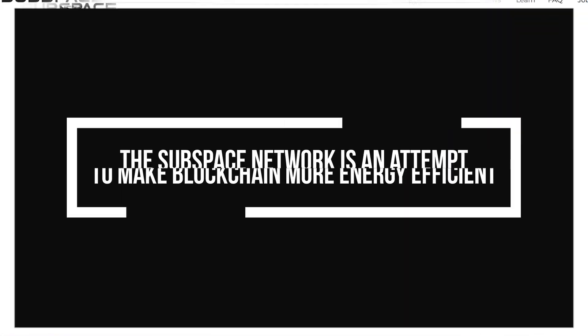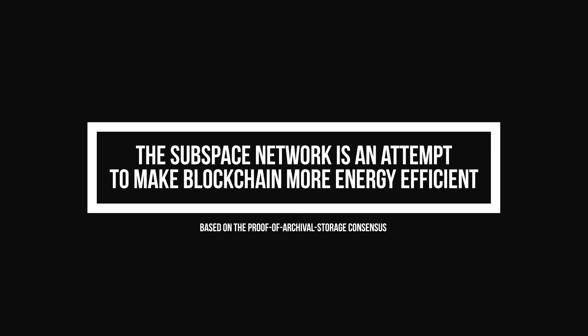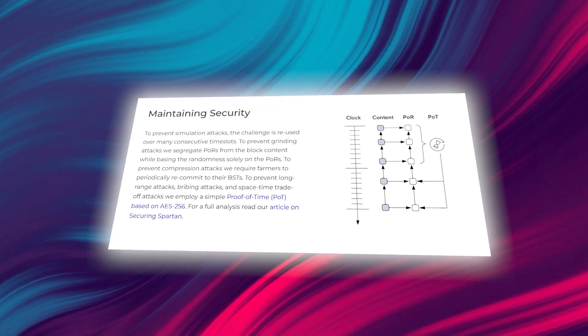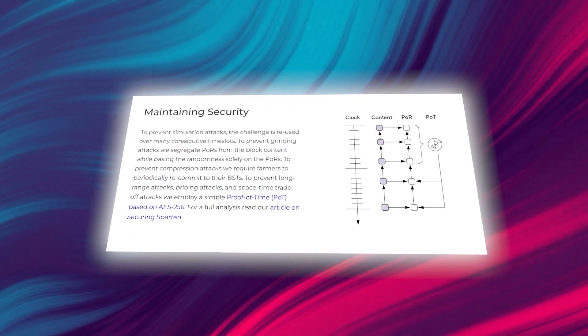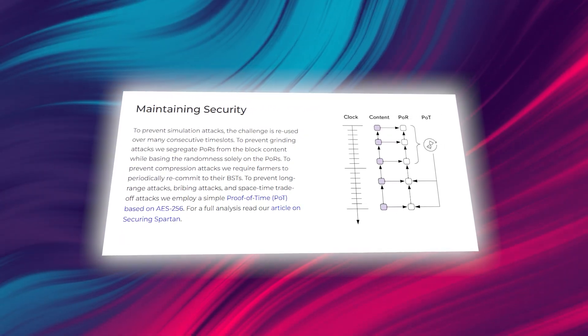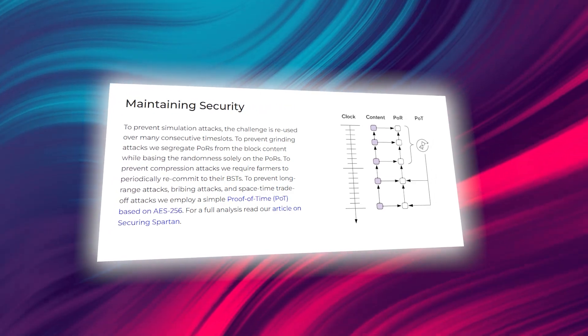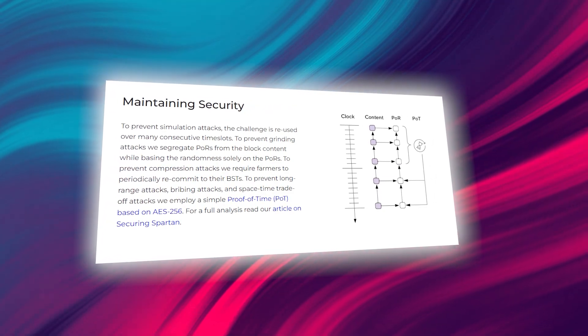The Subspace Network is an attempt to make blockchain more energy-efficient based on the proof-of-archival storage consensus, which replaces compute-intensive mining with a storage-intensive alternative. With the Subspace blockchain, farmers maintain neither state nor history while retaining the security properties and advantages of full node decentralization.